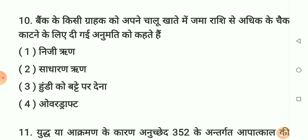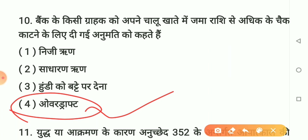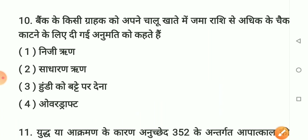Question number 10: Bank ke kisi grahak ko apne chalu khate mein jama raashi se adhik ke cheque kaatne ke liye di gayi anumati ko kya kehte hain? Option 1 - niji rin. Option 2 - sadharan rin. Option 3 - hundi ko batte par dena. Option 4 - overdraft. Sahi answer hai option 4: overdraft. Bank dwara chalu khate mein jama raashi se adhik cheque kaatne ki anumati ko overdraft kehte hain. Yaad rakhiye.